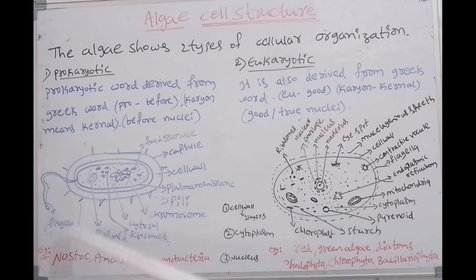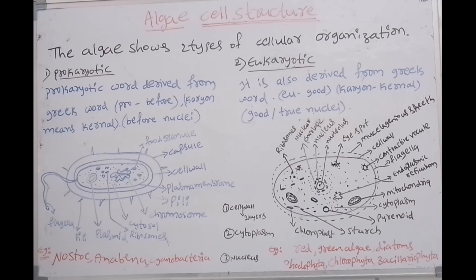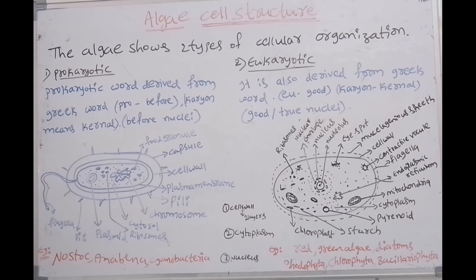Most algal groups have eukaryotic cell organization. The cell wall is made up of cellulose; silica is also present in the cell wall of diatoms. The cell wall is made up of silica, cellulose, or CaCO3. This cell wall is made up of CaCO3 in red algae. The cell possesses a well-organized nucleus.